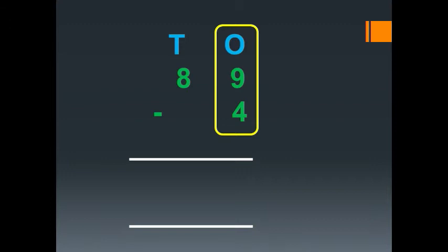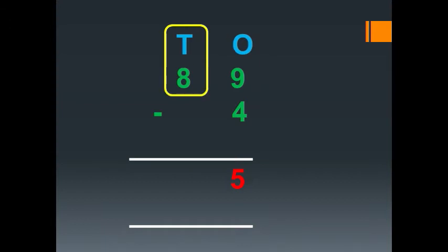9 minus 4 means 9 in the mind, 4 in the finger. Before 9: 8, 7, 6, 5. That 5 we have to write in the ones place. Then in the tens place, we only have 8. That 8 we can write as it is. 89 minus 4 equals 85.